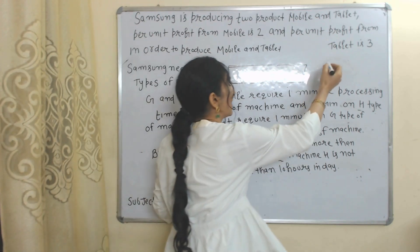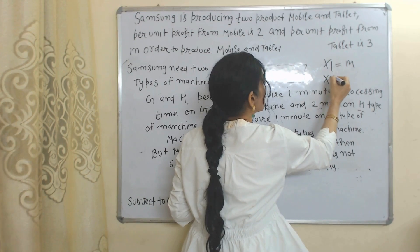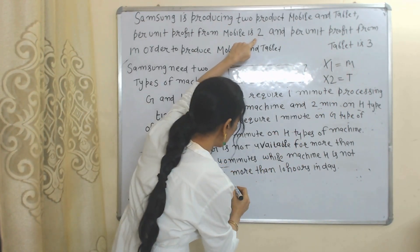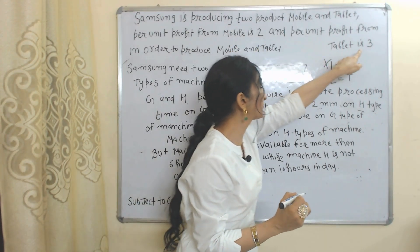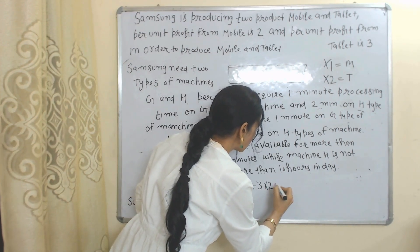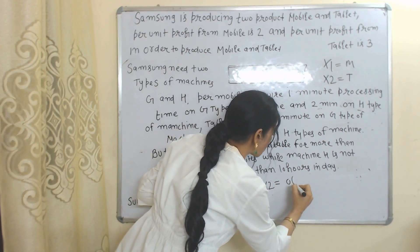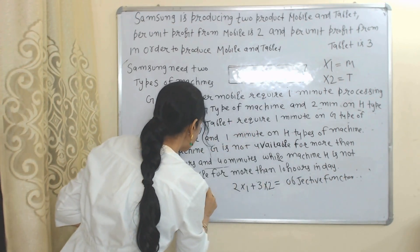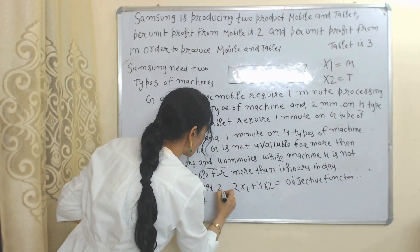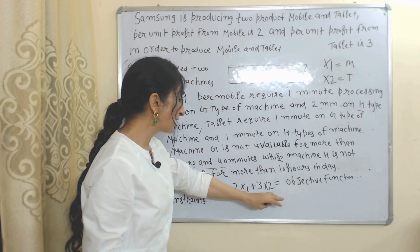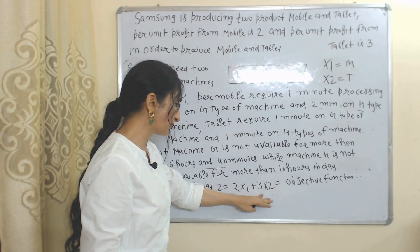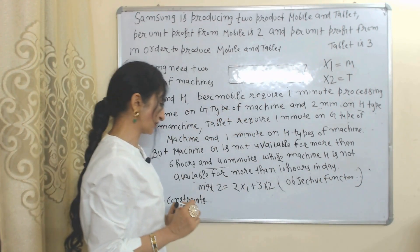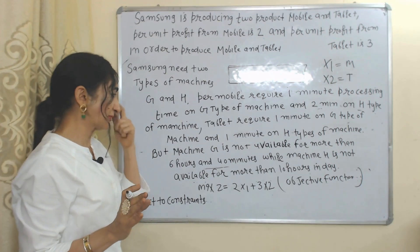Based on this question we will formulate the objective function. We assume x1 units of mobile and x2 units of tablet. Per unit profit from mobile is 2, so 2x1, and per unit profit from tablet is 3, so 3x2. Therefore our objective function is: Maximize Z = 2x1 + 3x2. This is our objective function — we want to maximize our objective.